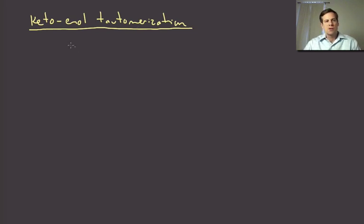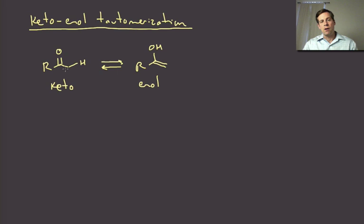Keto-enol tautomerization is something that all carbonyls are capable of doing. Basically what this involves is a carbonyl with at least one alpha proton can undergo a rapid rearrangement to give what looks like a hydroxy substituted alkene, an enol functional group, and this form is the keto functional group. It doesn't matter if it's an aldehyde or any carbonyl, it's just called the keto form. It turns out that whereas the keto form is electrophilic as we've been talking about, the enol form is actually electrophilic.